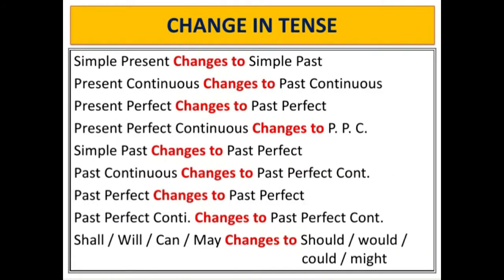Change in tense — you must memorize these rules. Simple present changes to simple past. Present continuous changes to past continuous. Present perfect changes to past perfect. Present perfect continuous changes to past perfect continuous. Simple past changes to past perfect. Past continuous changes to past perfect continuous. Past perfect stays as past perfect. Past perfect continuous stays as past perfect continuous. 'Shall' changes to 'should'; 'will' changes to 'would'; 'can' changes to 'could'; 'may' changes to 'might'.